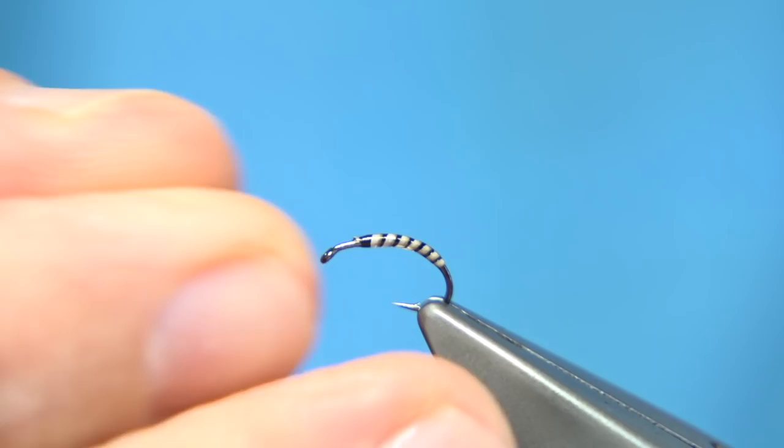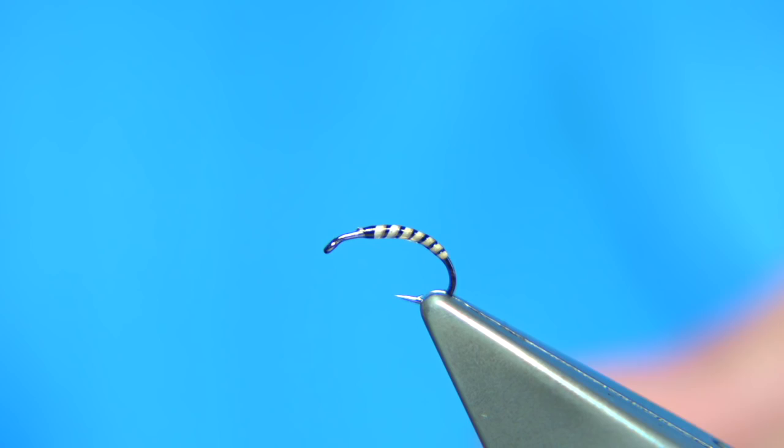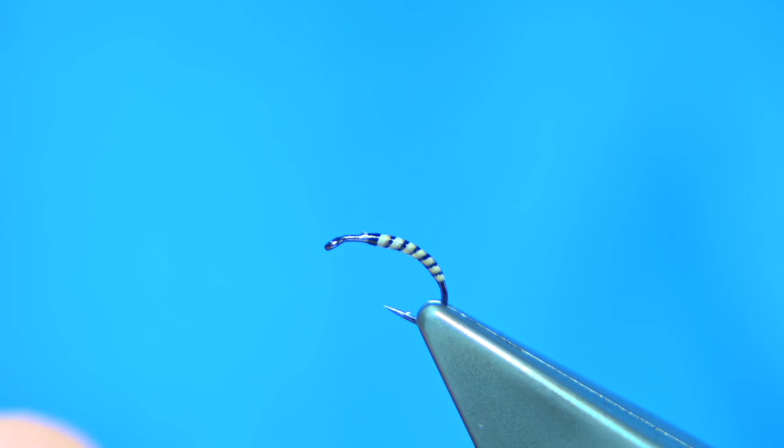I'm going to use a uni-thread 8-0 black. Just a bit of wax through it to get it started. First thing I'm going to do is make sure the hook is sitting right so you can see it. Just start at the eye. I'm going to take away the waste.